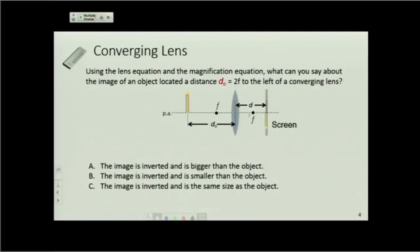Okay, so let's try this one. The questions I ask you on Monday will be similar to these. Using the lens equations and the magnification equation, what can you say about the image of an object located a distance d₀ equals 2f? So here's the focal length of the lens. Suppose I put an object at twice,